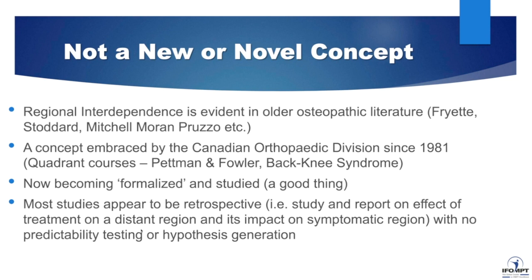The problem with most studies is that they appear to look backwards — they appear to be retrospective. In other words, let's just manipulate the thorax and see what happens to range of motion of the neck, or let's manipulate the thorax and see whether or not the person can elevate their arm. There's no understanding or testing of predictability — is there anything we can do before a treatment intervention that suggests treating this area of the body is going to have a positive impact somewhere else? This approach is what I'd really like to share in this webinar: how we are getting closer to having specific tests that will help us identify, when there are multiple impairments and persistent pain, where we should begin treatment.